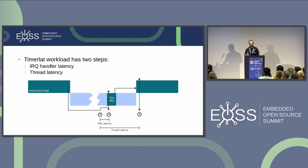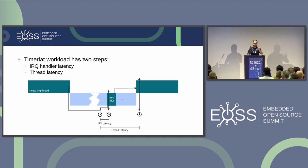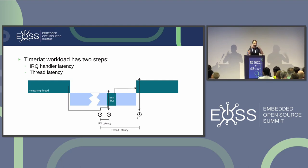Because I'm in the kernel controlling the timer, TimerLat already breaks the latency metric into two metrics. It has a special IRQ handler; when it's activated, I measure the IRQ latency. This IRQ then wakes up the thread, and the thread latency is reported later. So instead of one metric, it already shows two metrics.